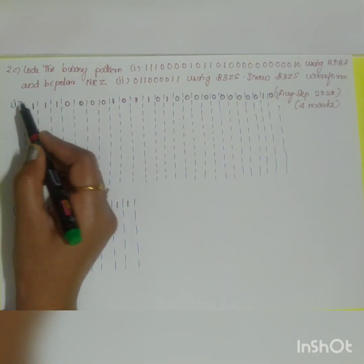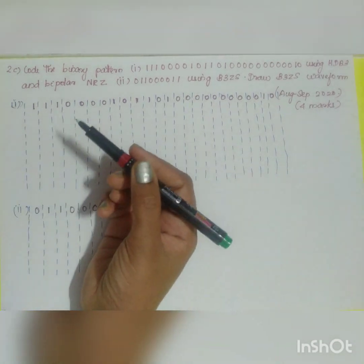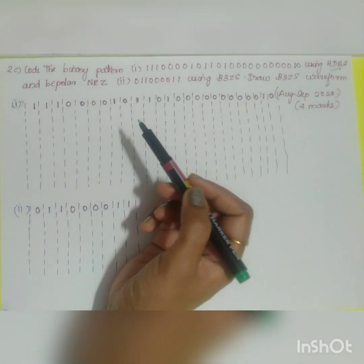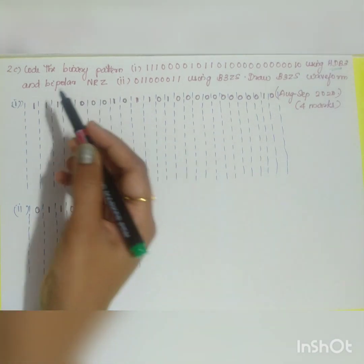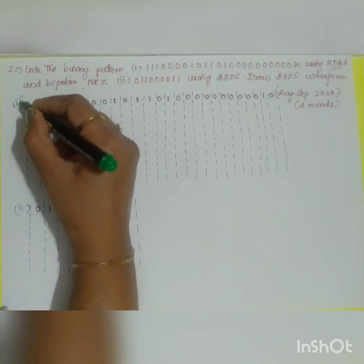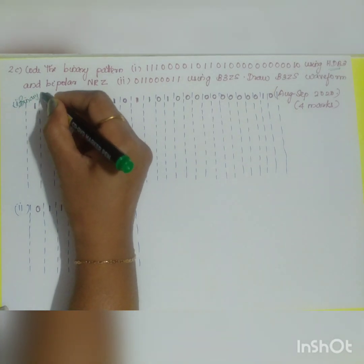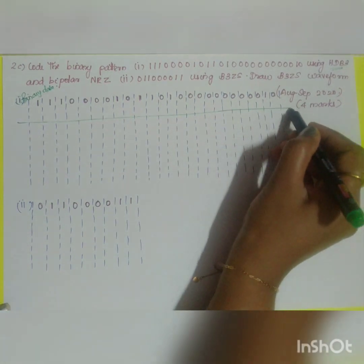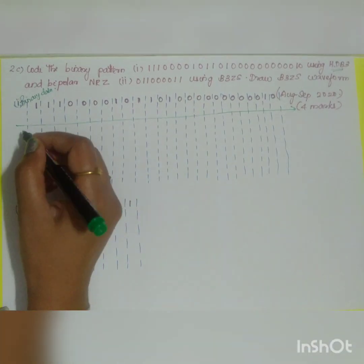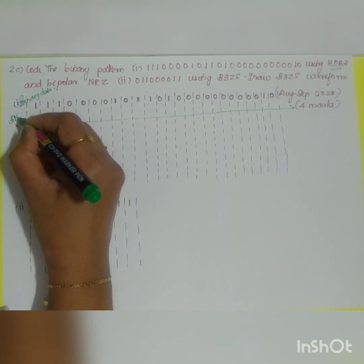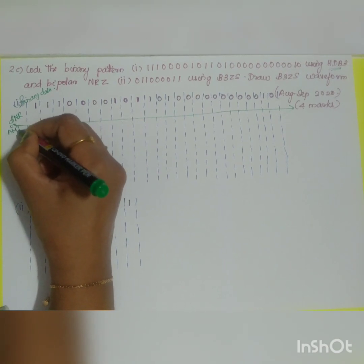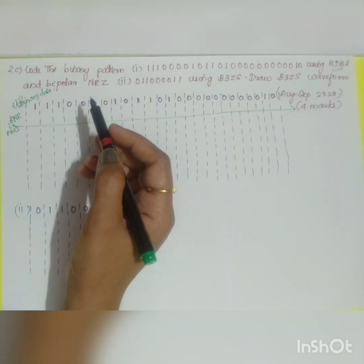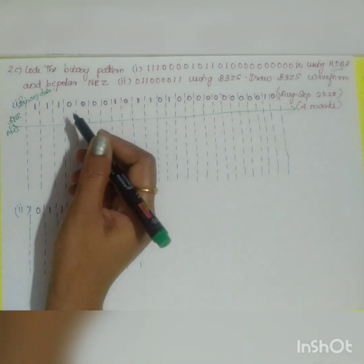Let us go for the first option. So what is asked: you have to code using the line coding HDB3 and bipolar non-return to zero. This is your given binary data. First, let me draw the bipolar non-return to zero for this binary data — also known as bipolar NRZ or AMI. Bipolar non-return to zero means consecutive ones will be replaced by plus A and minus A.